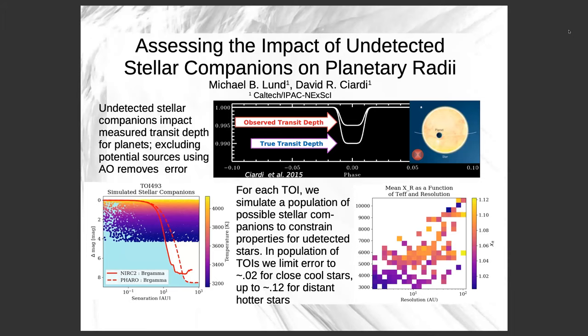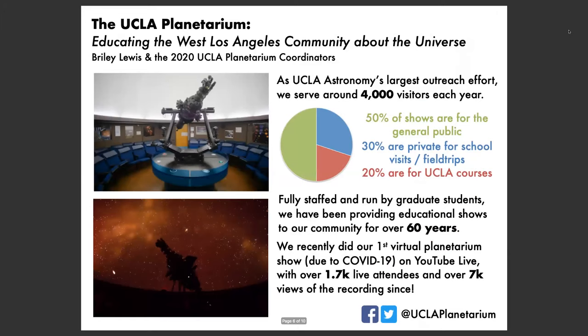In the bottom left figure, we have contrast curves for one of the TOIs as the two red lines, and then a large population of simulated possible stellar companions. Any of those points that appear above those contrast curves would be detected. So we only have to look at what is the likelihood that there is a star that would fall below those contrast curves and be undetected — look at the poster for more information. All right, thanks Mike.